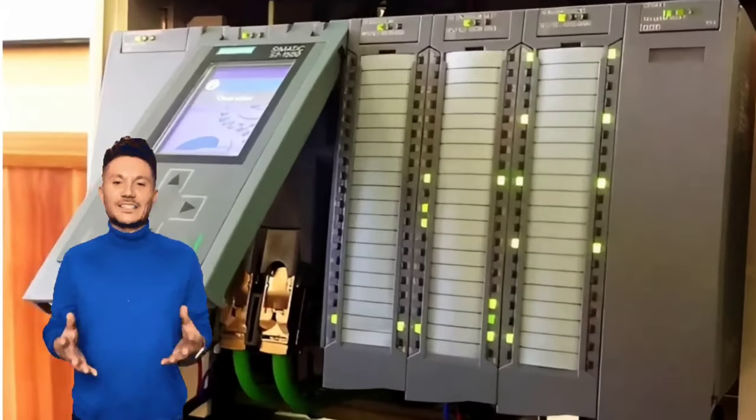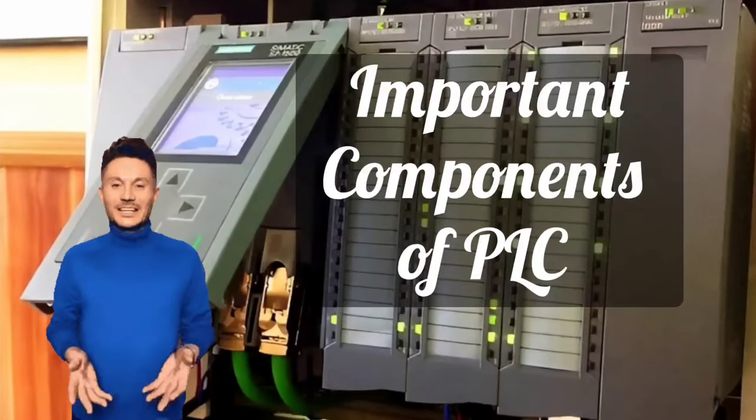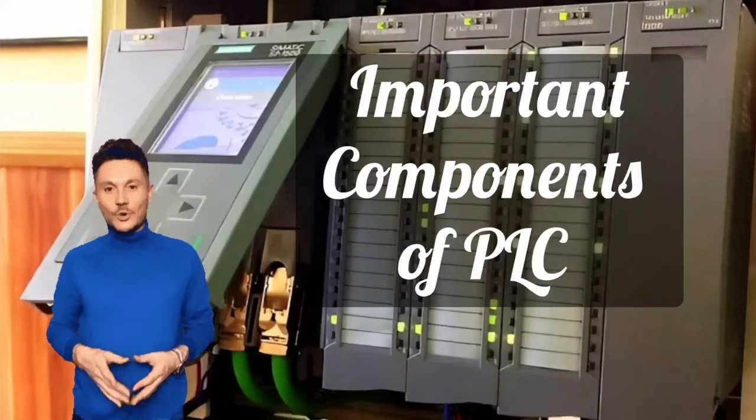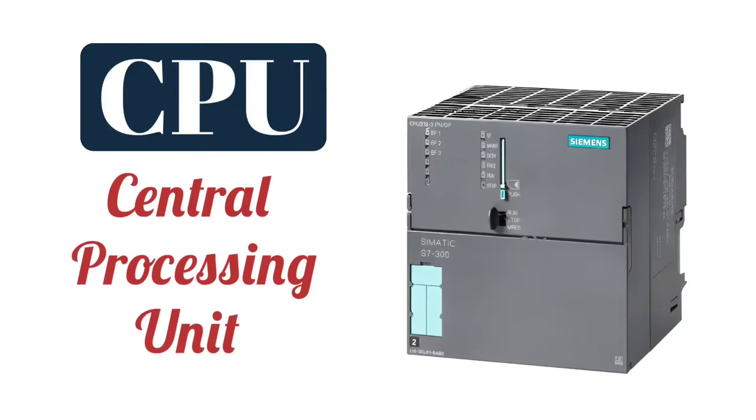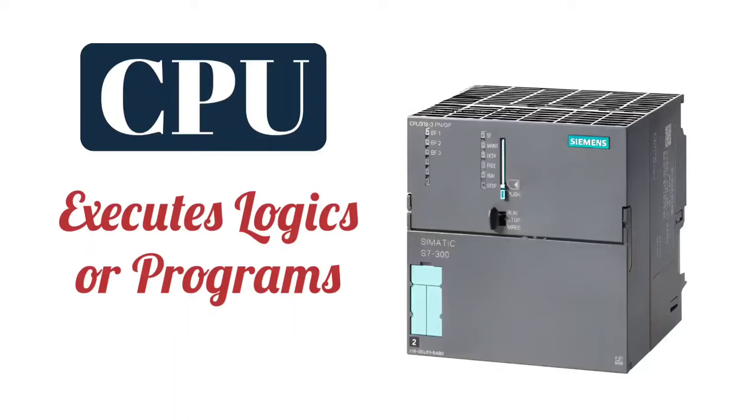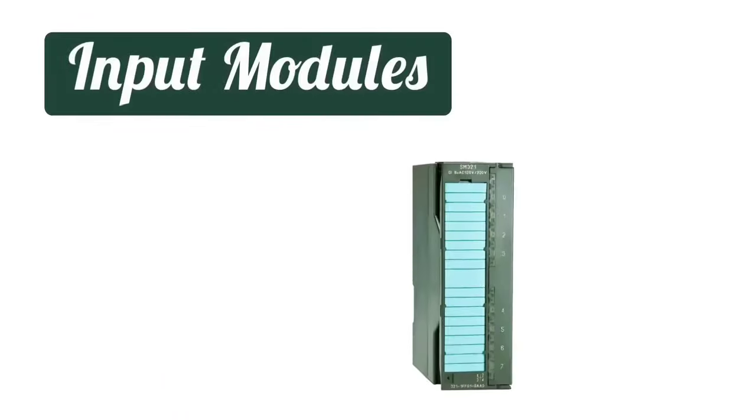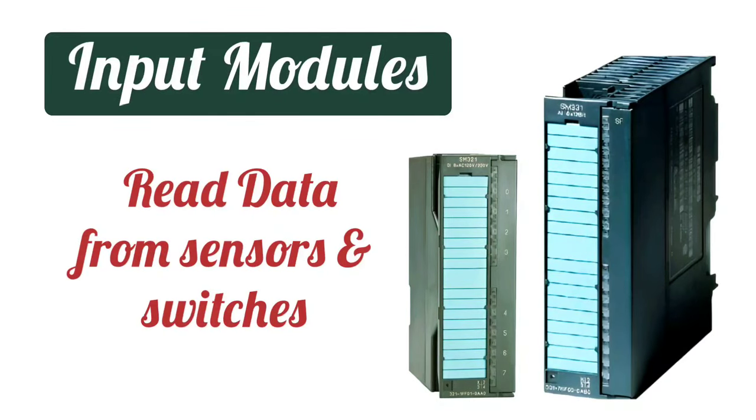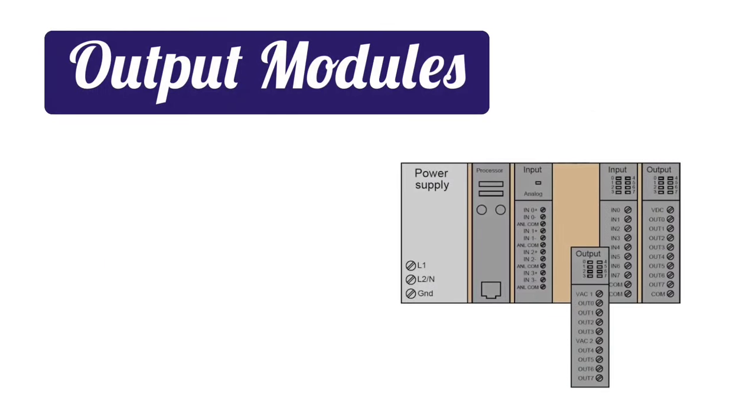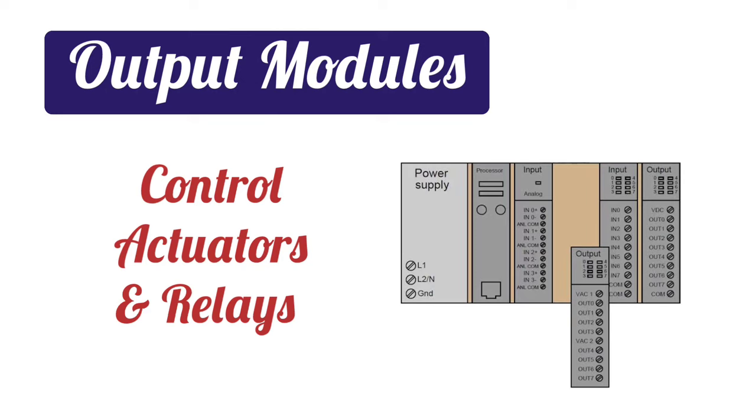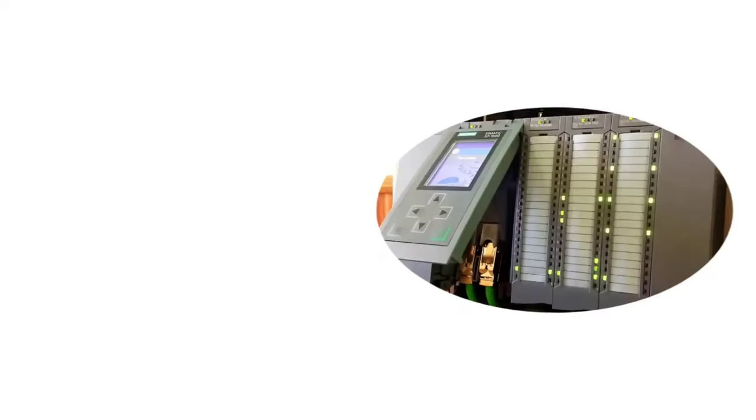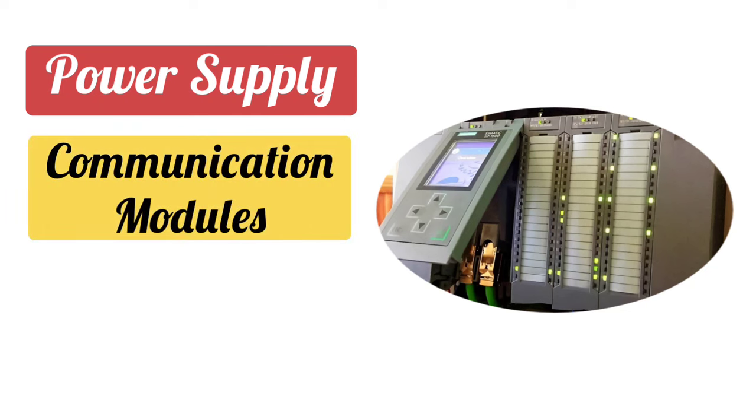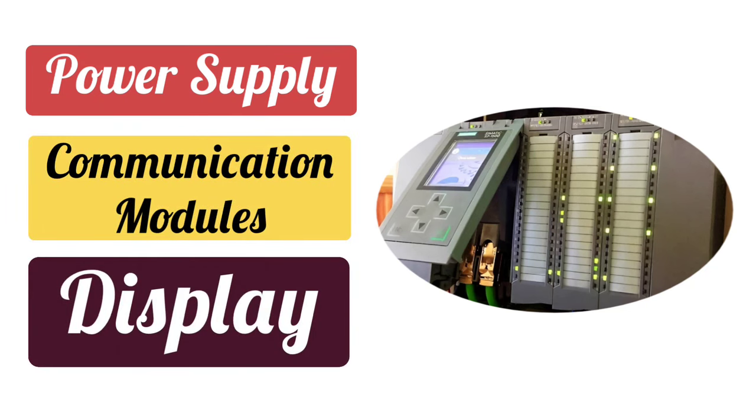Friends, PLC has some important components. What you all should know. The first is CPU, Central Processing Unit, which executes the logics or programs. The second is the input module that reads data from sensors and switches. And the third is the output module which controls the actuators and relays. Other than this, the power supply, communication module, and display screen are also important parts.